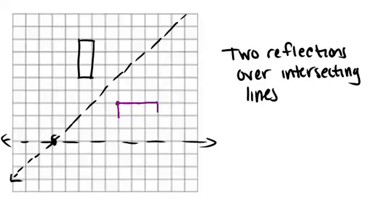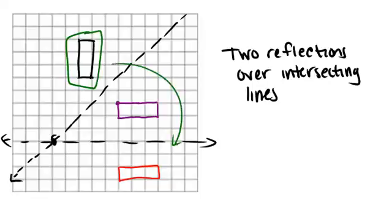Our result is this rectangle here. Again, we want to think about what one transformation could we have done to go from the original rectangle to this rectangle. In this case, the answer is a rotation.